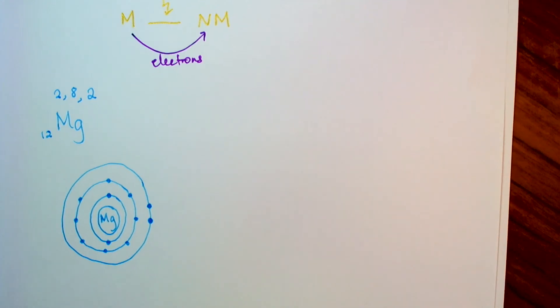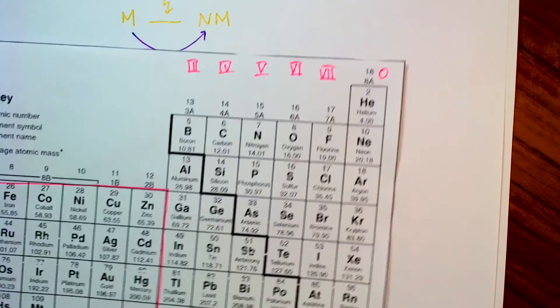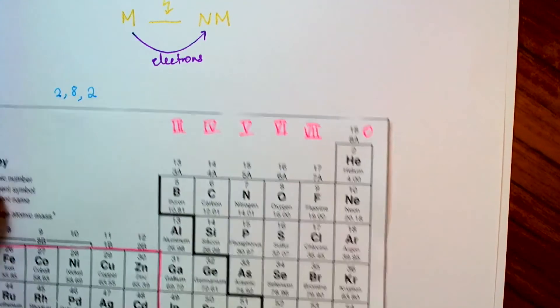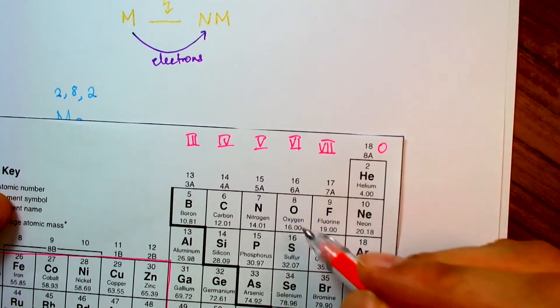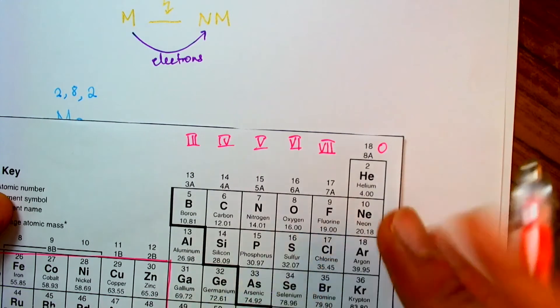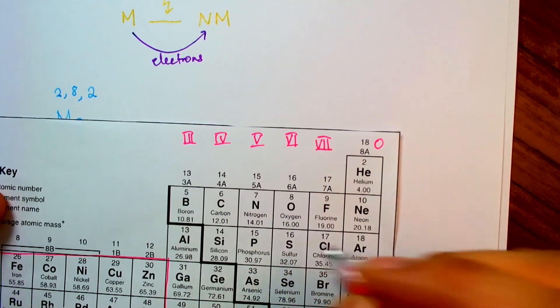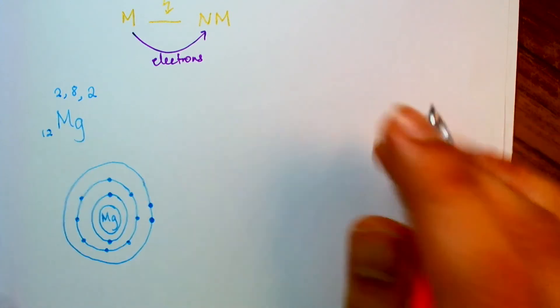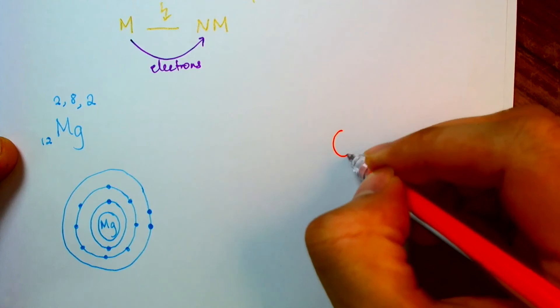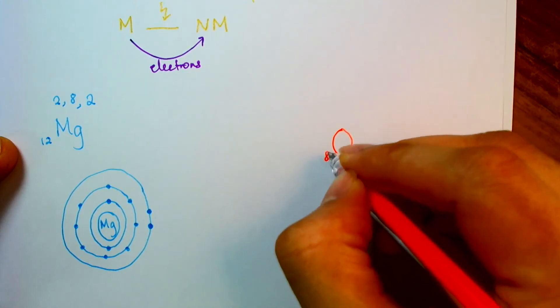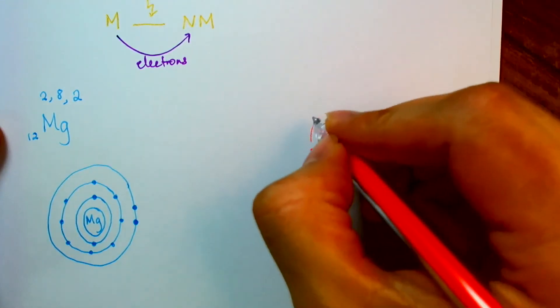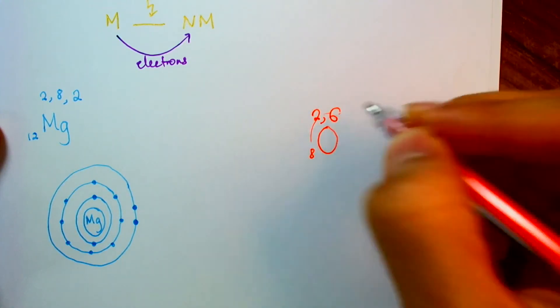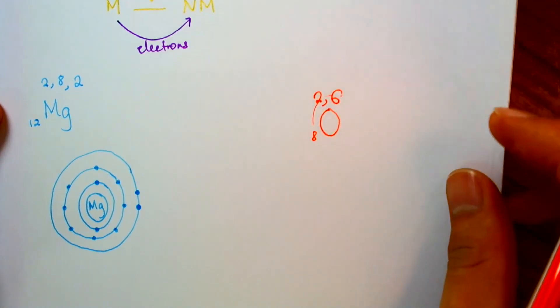And for my nonmetal, I will pick oxygen this time. So oxygen is above the staircase here, so it is a nonmetal. And oxygen, we note, is element number 8. So I will write oxygen has 8 protons and hence 8 electrons. So the configuration would be 2. And that leaves 6 left over for the next level.